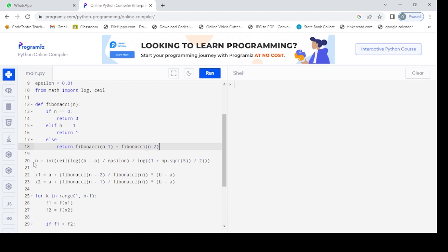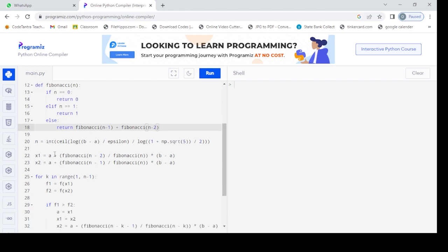Here n is the number of iterations. n equals ceiling of log((b - a) / epsilon) divided by log((1 + sqrt(5)) / 2). Here ceiling rounds off to the nearest integer. And x1 and x2 are two initial endpoints between the search intervals a and b.